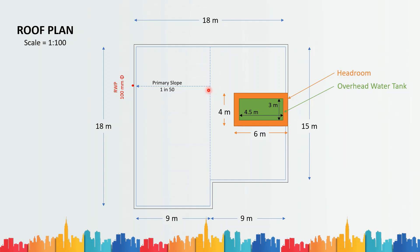The slopes of the roof are decided depending on the amount of rainfall the area receives. If the area receives a huge amount of rainfall, the slope has to be steeper. If it receives moderate or low rainfall, the slope can be less — one in 100 or up to one in 200. Since I am teaching this from a building design and drawing point of view, I will not go into detailed calculations.